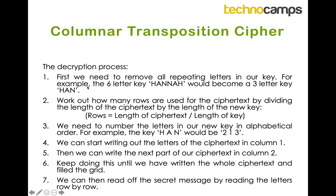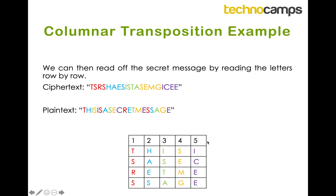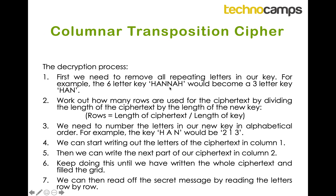With the second part we're going to use a key that is a word, and this decryption process has seven steps. The first step, which we didn't have before, is figuring out our key. We need to remove all repeating letters from it. For example, if the key is 'hannah' — six letters — we go through: H is fine, A is fine, N is fine, then the second N is a repeat so we remove it, then A is a repeat so we remove it, then H is a repeat so we remove it. We always keep the first instance and remove later ones. So 'hannah' becomes the three-letter key H, A, N.